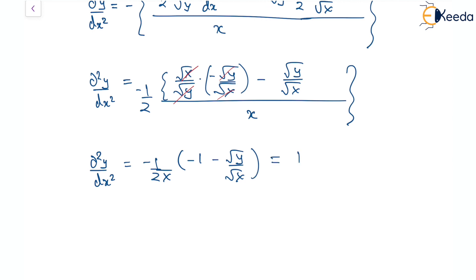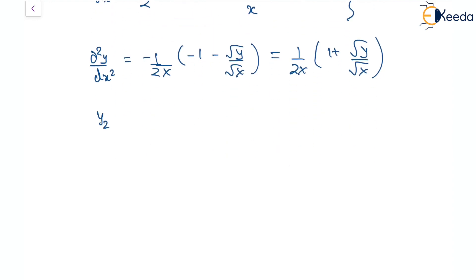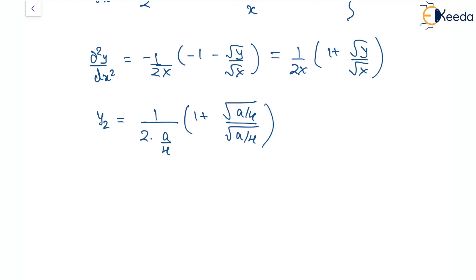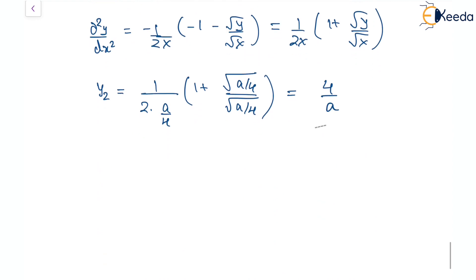The second derivative is (1/2x)(1 + √y/√x). Evaluating at (a/4, a/4): y2 = (1/(2·a/4))(1 + 1) = (4/a)(2)/2 = 4/a. So y1 = −1 and y2 = 4/a at point P(a/4, a/4).